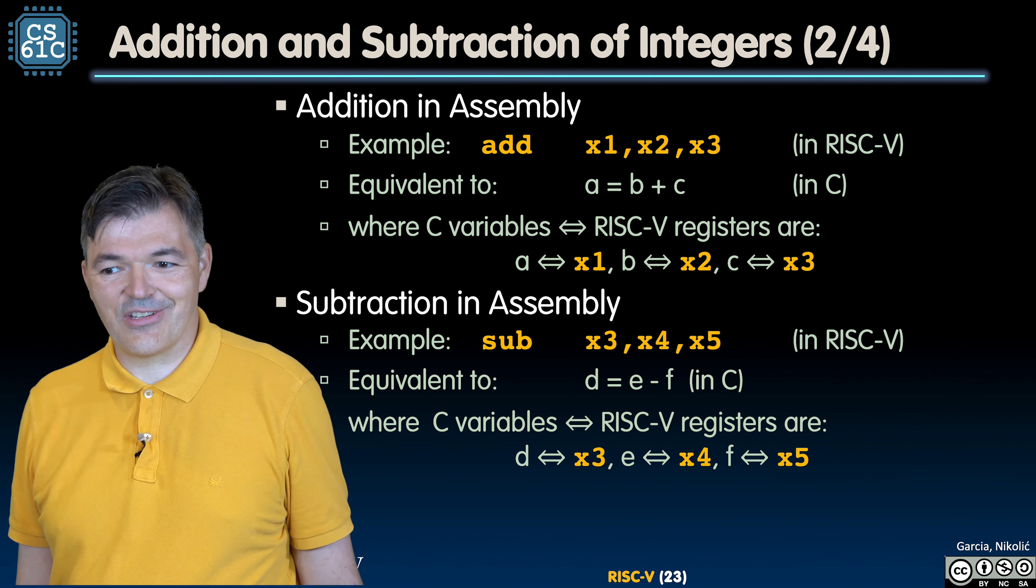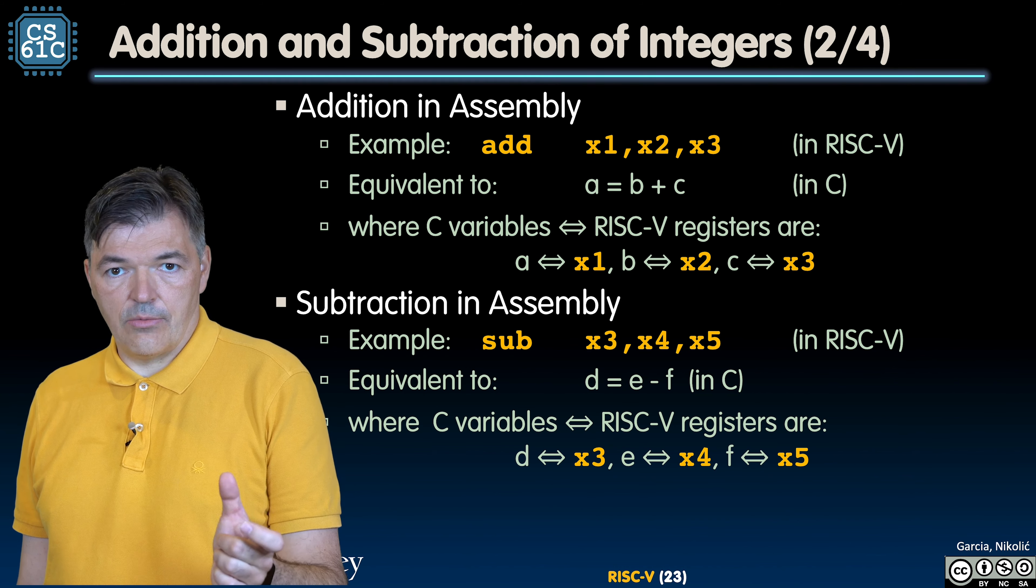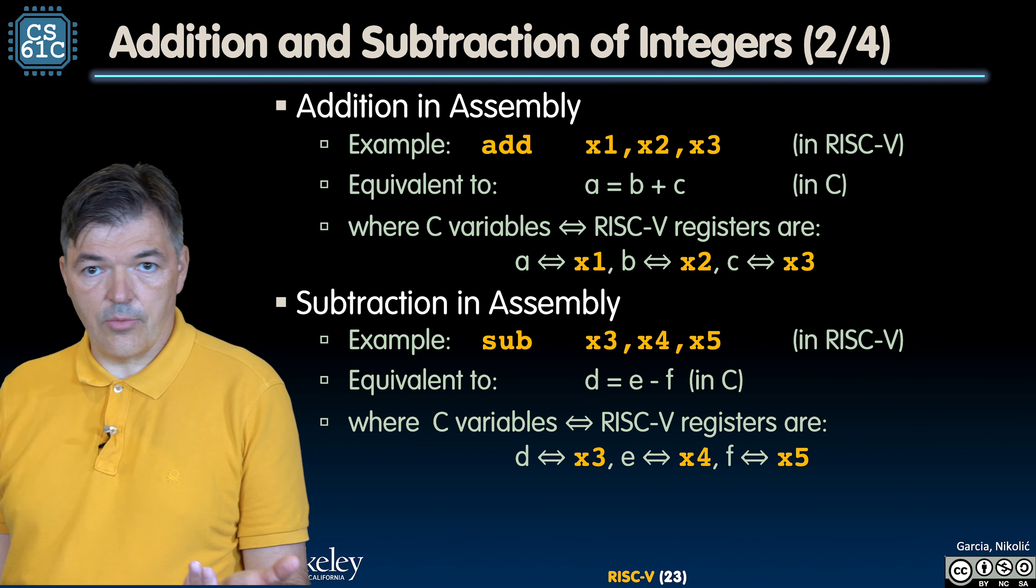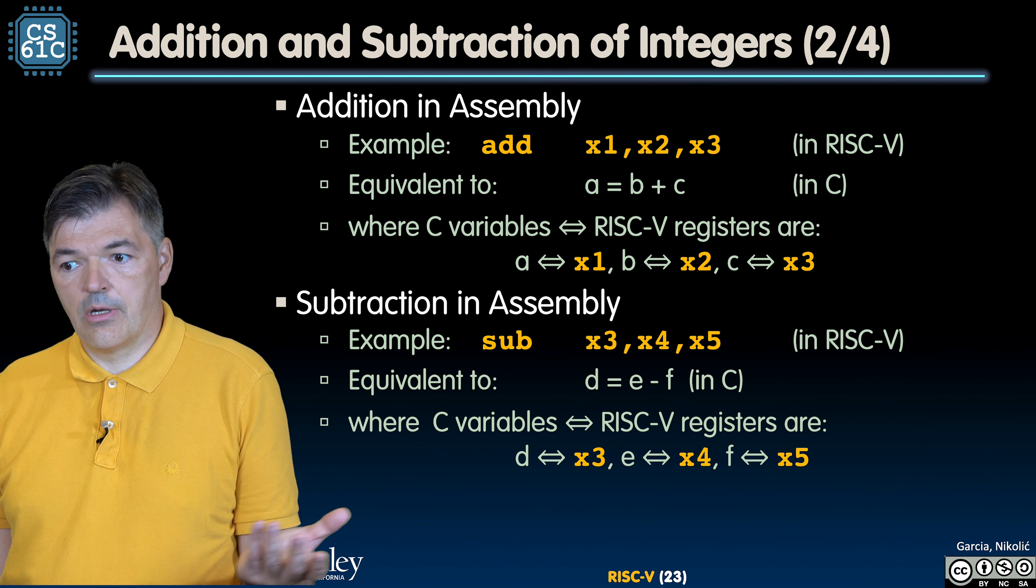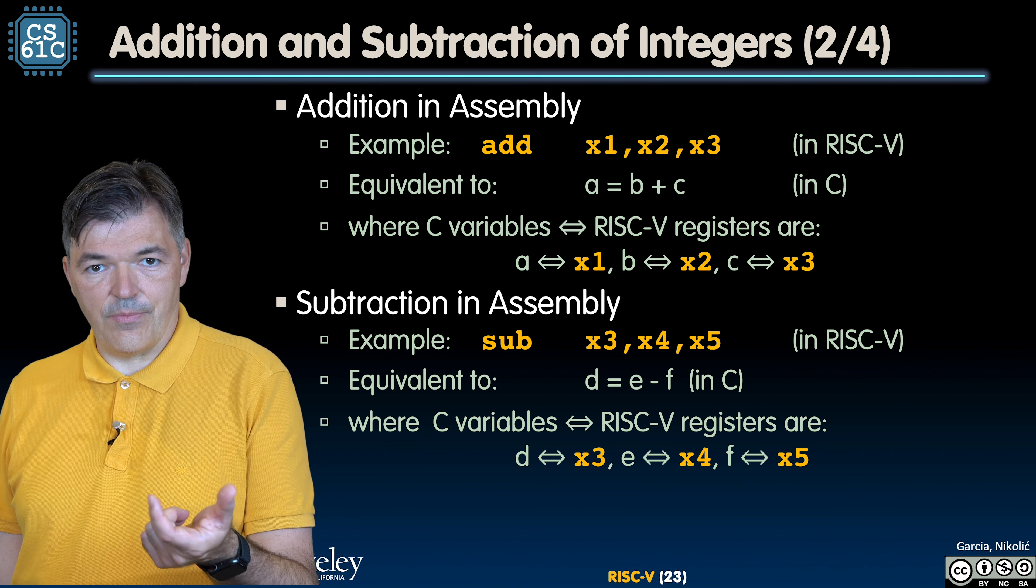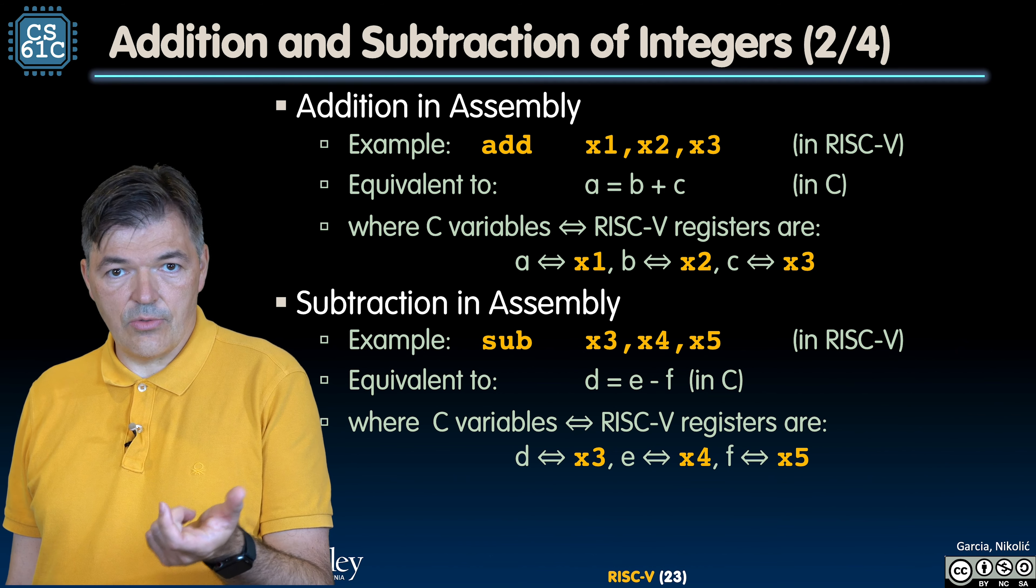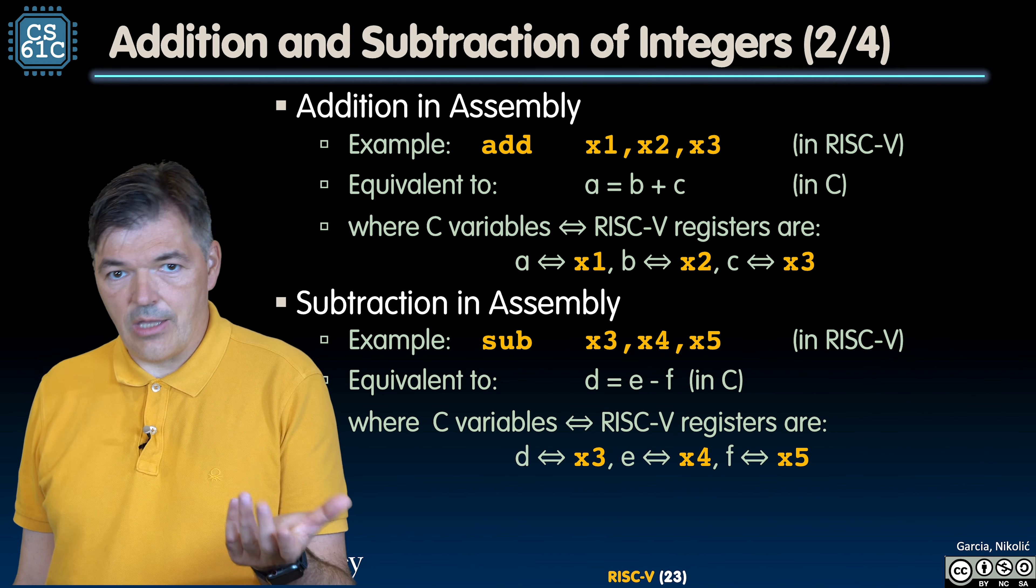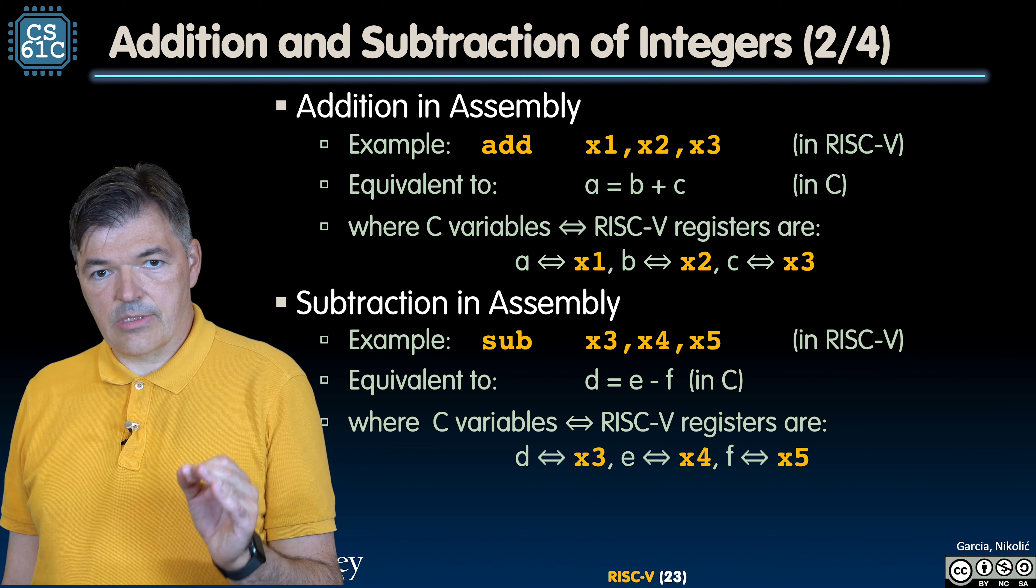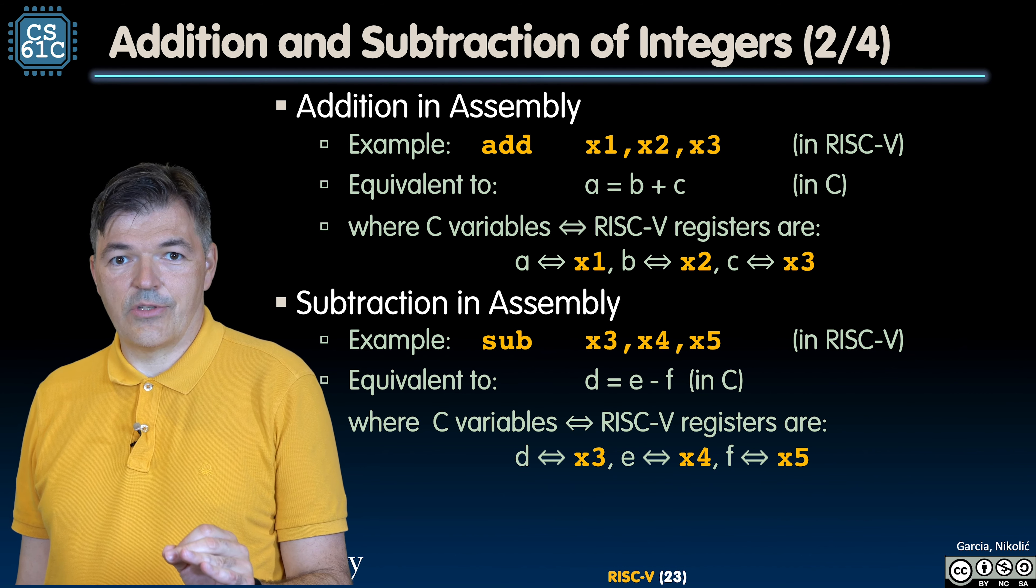The key difference between add and subtract: addition is a commutative operation, so it doesn't matter which registers you store the operands B and C in, source 1 or source 2, they'll be added anyway. In subtraction it matters because we are subtracting the value of source operand 2 from the value of source operand 1.